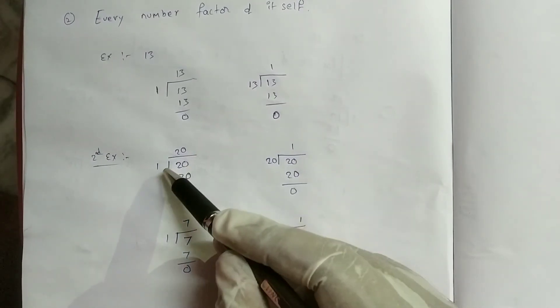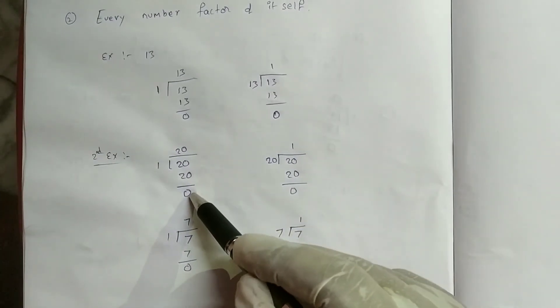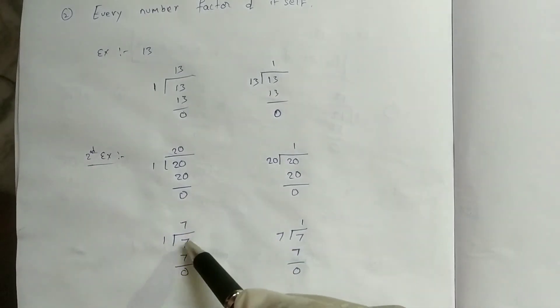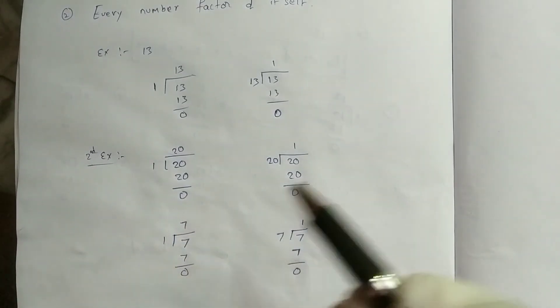1 divides 20. The remainder is 0. And 1 divides 7. The remainder is 0. This confirms that 1 is a factor of every number.